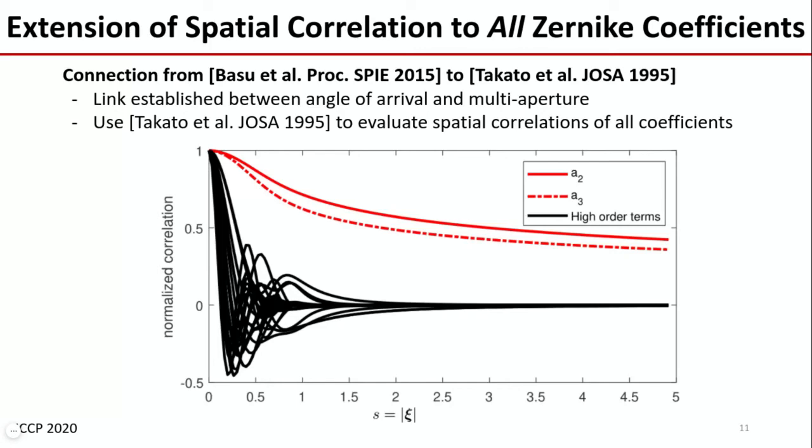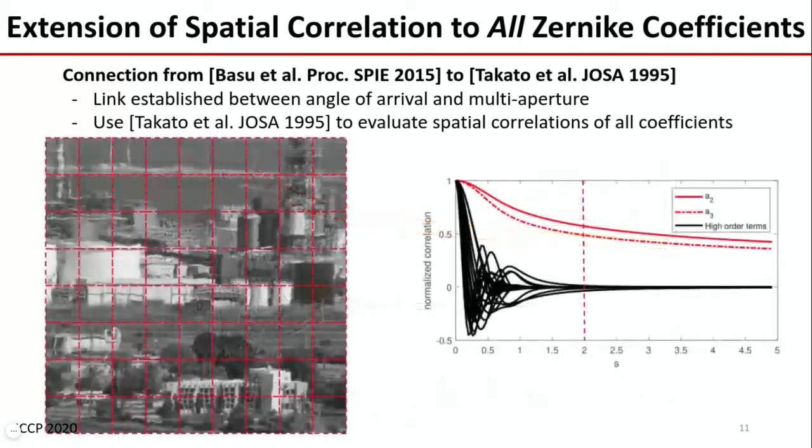We then make the following approximation. For the blur terms, we segment the image into blocks and use only one PSF for the entire block and maintain the tilt having its global dependence.